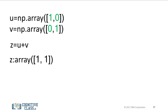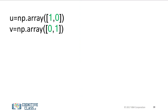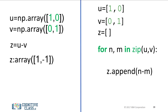We can also perform vector addition with one line of NumPy code. It would require multiple lines to perform vector subtraction on two lists, as shown on the right side of the screen. In addition, the NumPy code will run much faster, which is important if you have lots of data. We can perform vector subtraction by changing the addition sign to a subtraction sign.